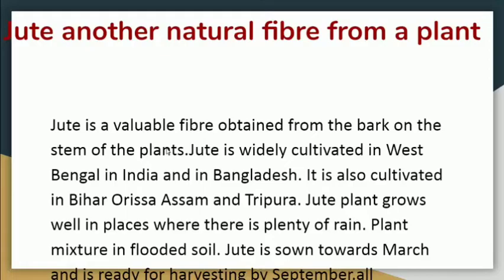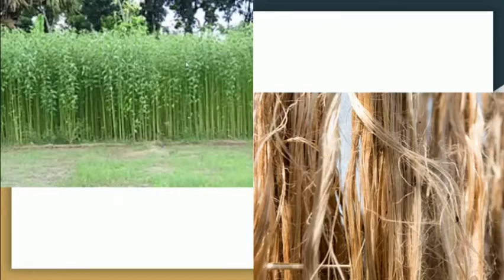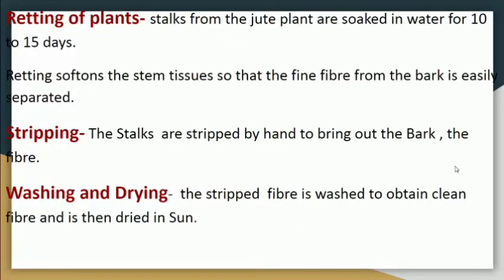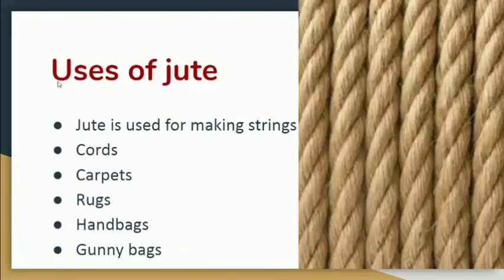Jute is mainly sown in March and is ready for harvesting in September. How we obtain jute fiber: First is retting of the plant — we soak the jute plant for 10 to 15 days. Retting means soaking, which softens the stem tissue so we can extract the fiber from it. Next is stripping — the stalks are stripped by hand to bring out the fiber from the bark. Next is washing and dyeing — we wash those strips and fiber, clean it, dry it, and later use it for many purposes.